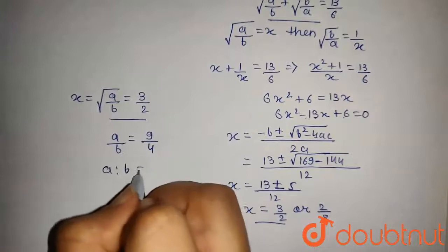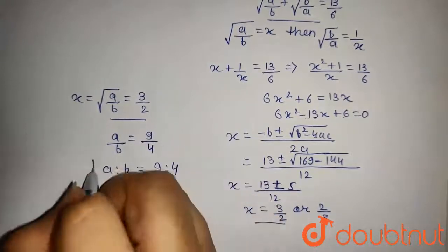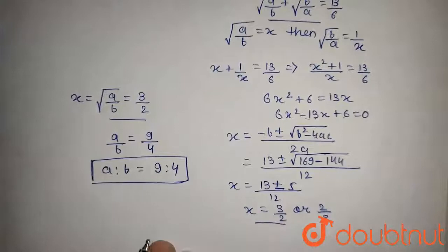Squaring both the sides we get A by B is equal to 9 by 4. So A ratio B is equal to 9 is to 4. This is what we have to prove here.